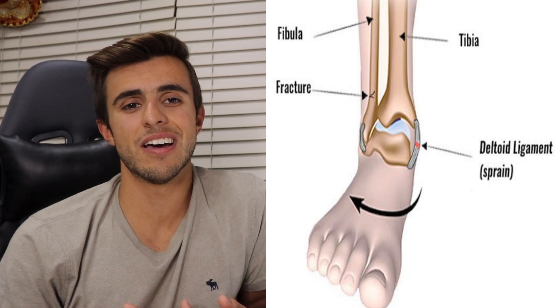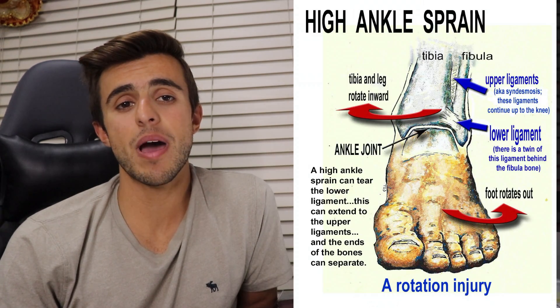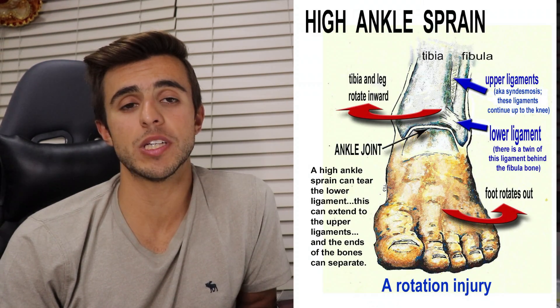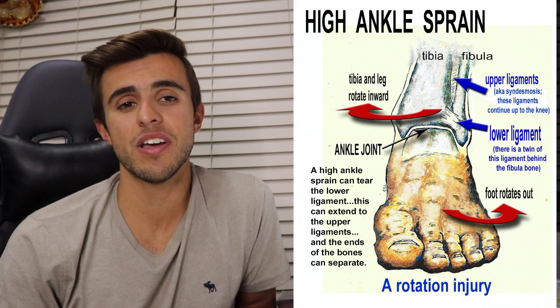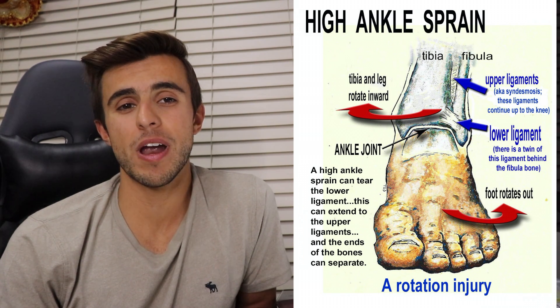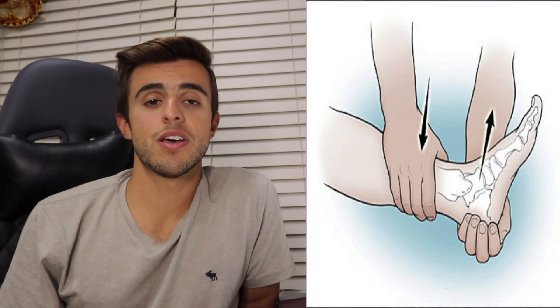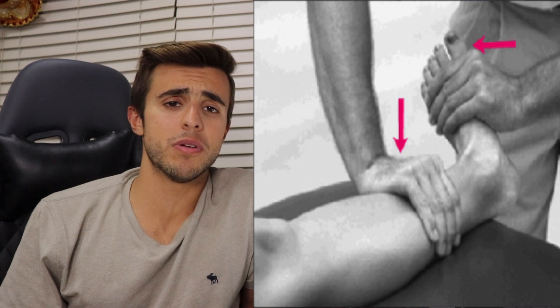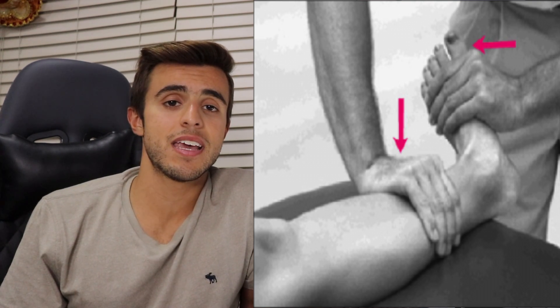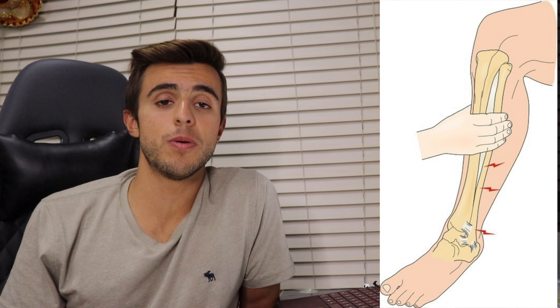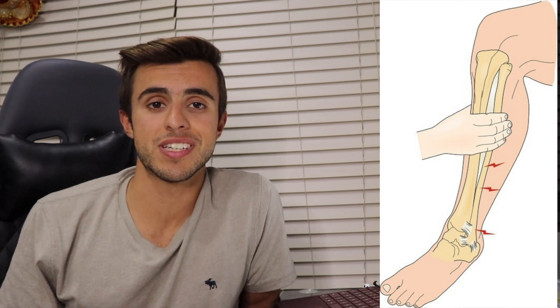Medial ankle sprains occur to the deltoid ligament, which is around the medial malleoli. Then you have your high ankle sprains, which happen with external rotation and are a little bit more rare but also more severe. For all these ankle sprains, you can do special tests. For a lateral ankle sprain, you would do an anterior drawer test. For a medial ankle sprain, you could do a talar tilt or a Kleiger's test. And for a high ankle sprain, you would do a syndesmotic test or a compression test.